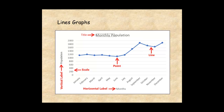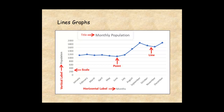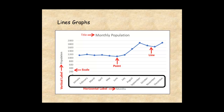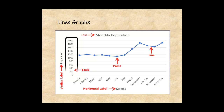The title tells you what the graph is about. Choose a title that is brief and appropriately describes the data. The scale of the graph explains the number of units used to define each point on the graph. For this graph, the months of the year are shown on the x-axis, and the population is shown on the y-axis, starting at zero and increasing by 200.